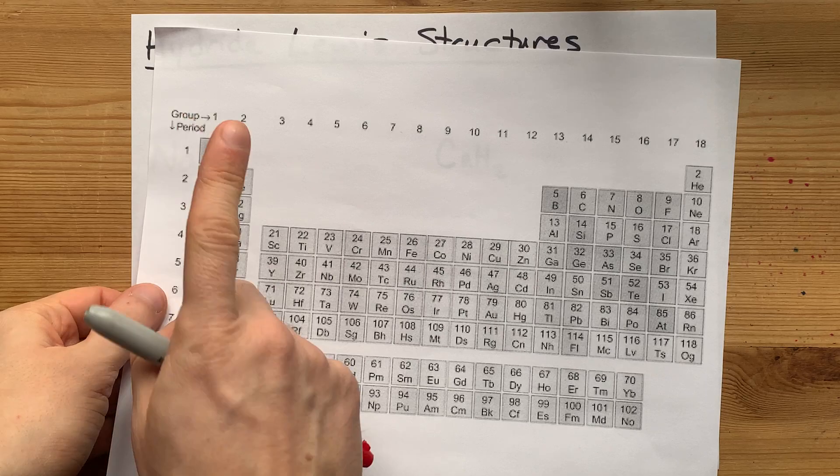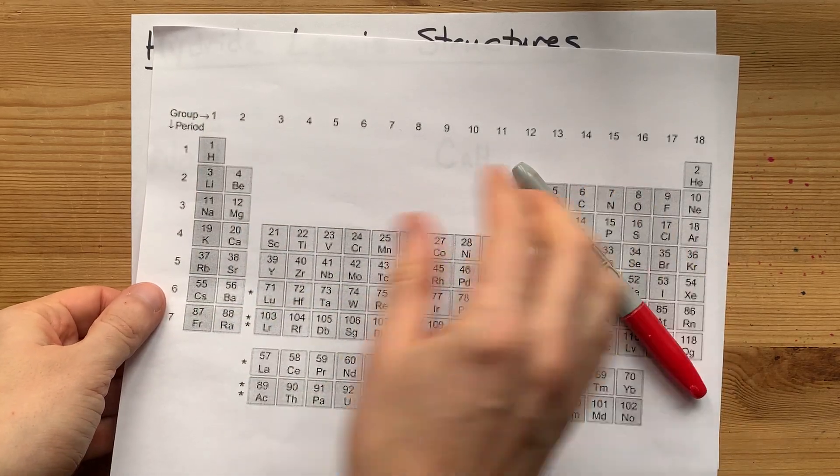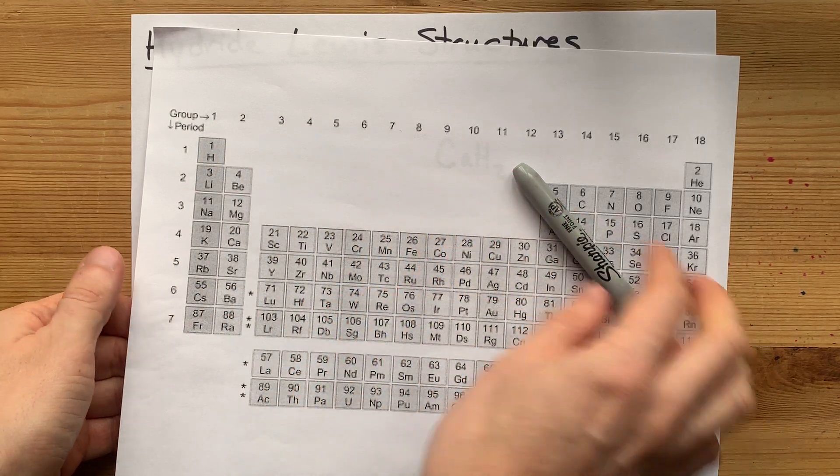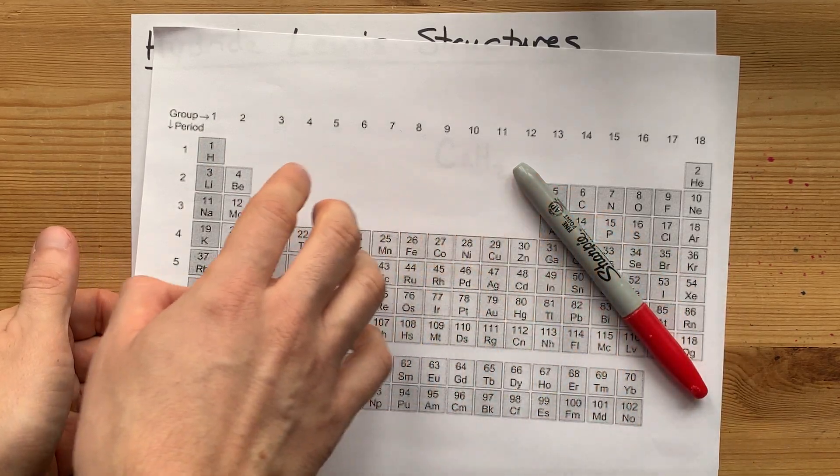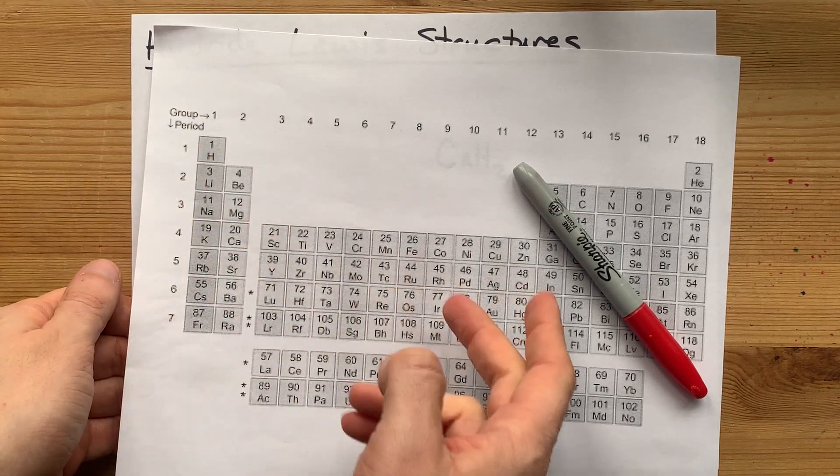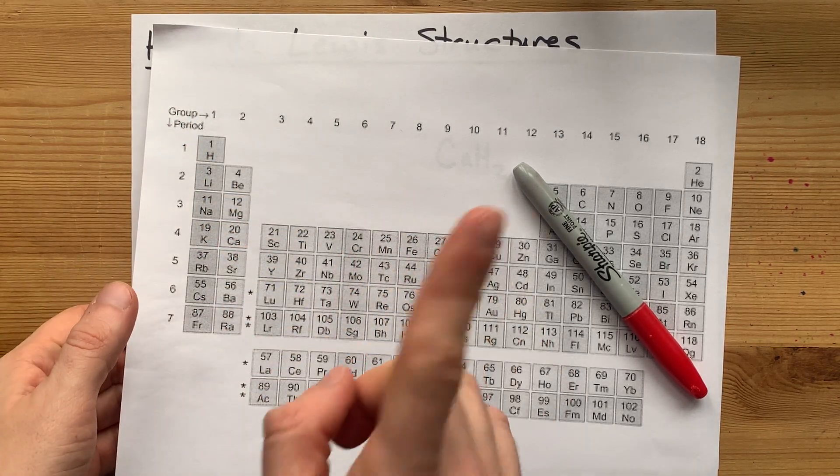When hydrogen, a non-metal, and I know it's on the left side of the table, but it's the only exception to that staircase rule here. Everything to the left of the staircase except for hydrogen is a metal. Hydrogen, you have to memorize, is a non-metal.